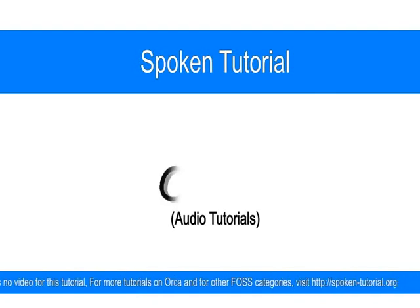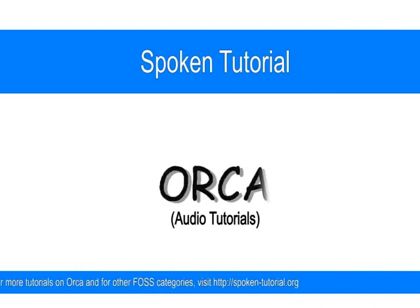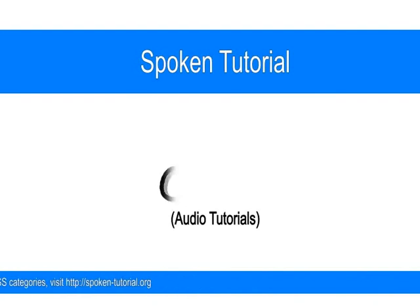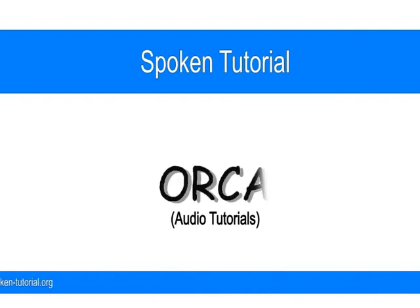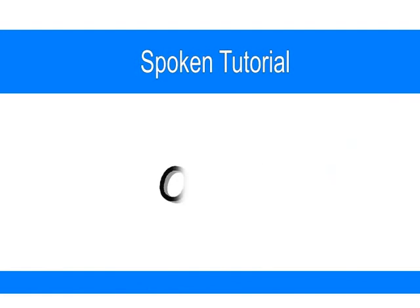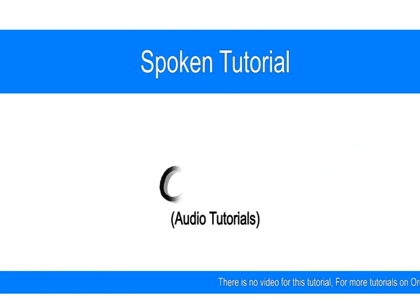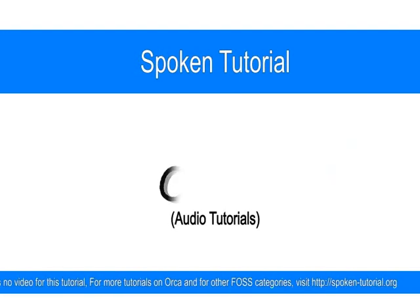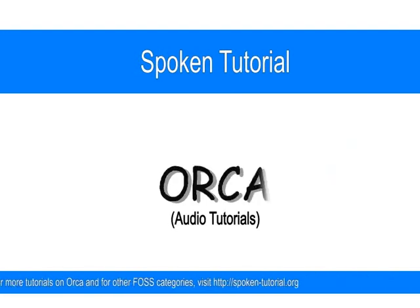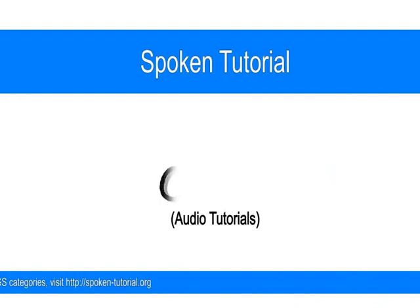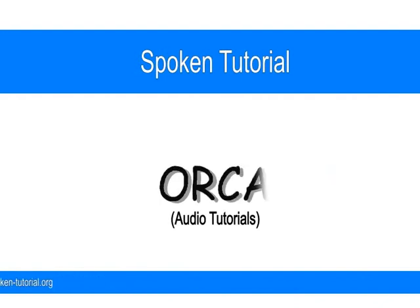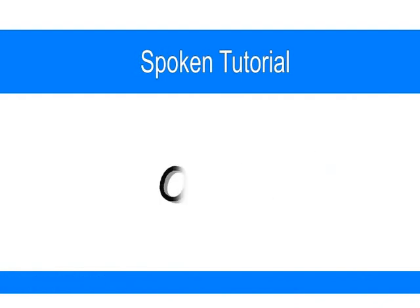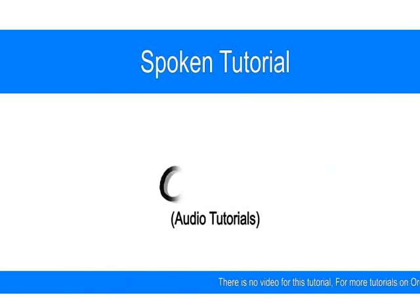The next option is whether Orca should be detailed in everything or as precise as possible. Press tab and you will find the verbosity panel. [Orca: Verbosity panel, verbose, selected radio button.] Just use the up and down arrow — you will find brief and verbose. [Orca: Down — brief, selected radio button.] For a beginner it's better to keep it on verbose. [Orca: Up — verbose, selected radio button.] The next few options are advanced; we will tab through them to locate two extremely important options.